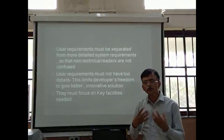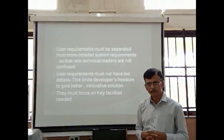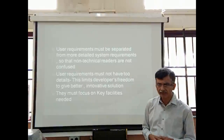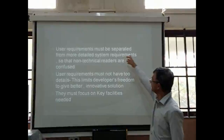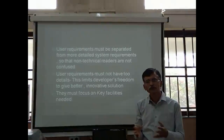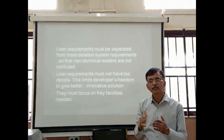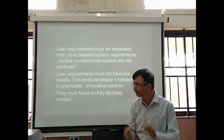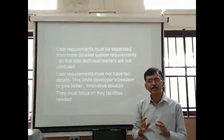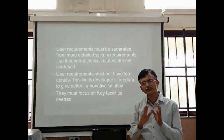There are certain rules and notations for how you should write user requirements. First, user requirements must be separated from detailed system requirements. User requirements should be very simple, precise, and abstract — not detailed — so that non-technical readers are not confused. They should be written in simple wording.